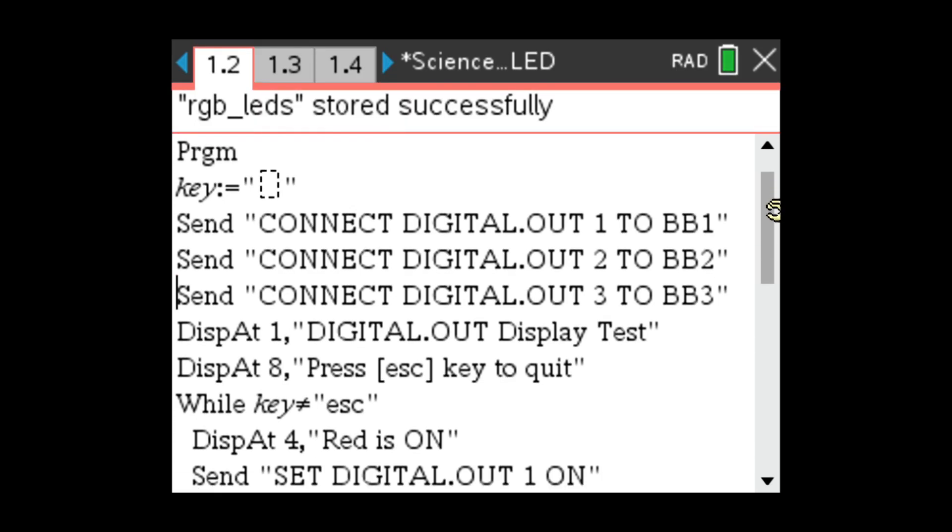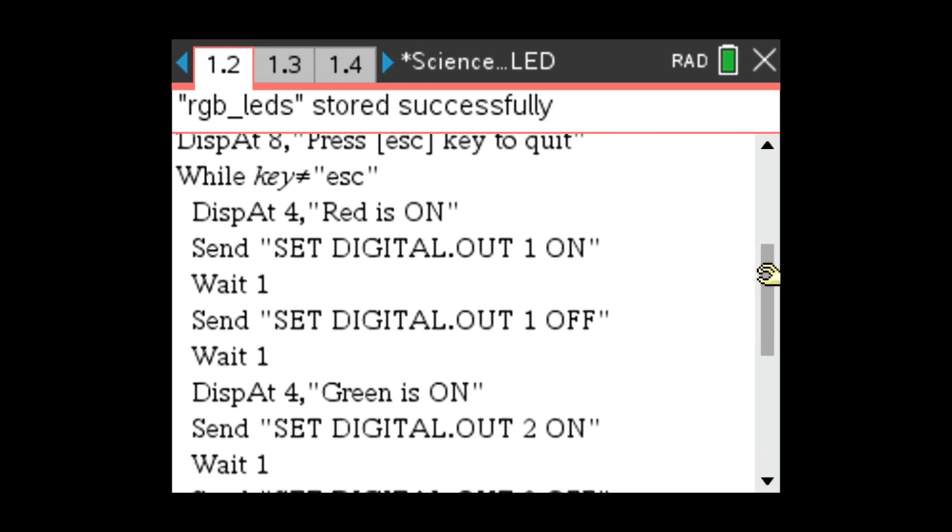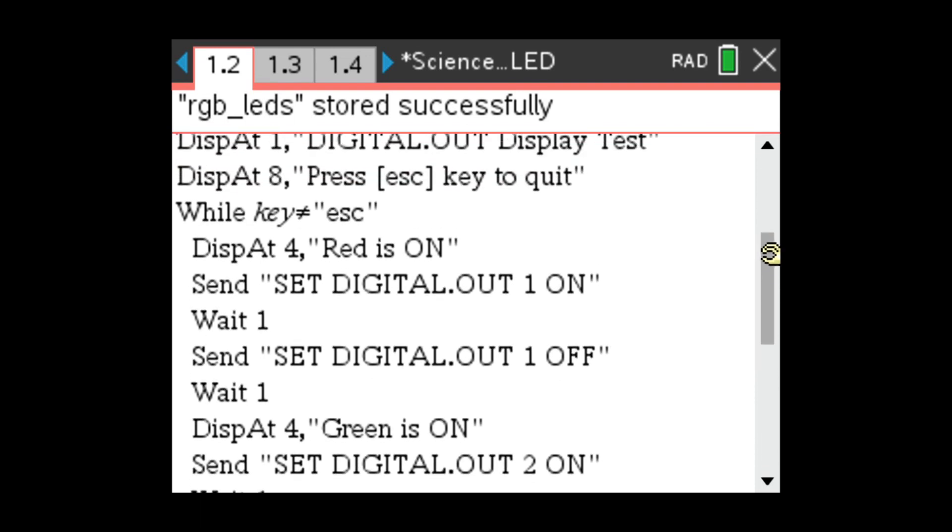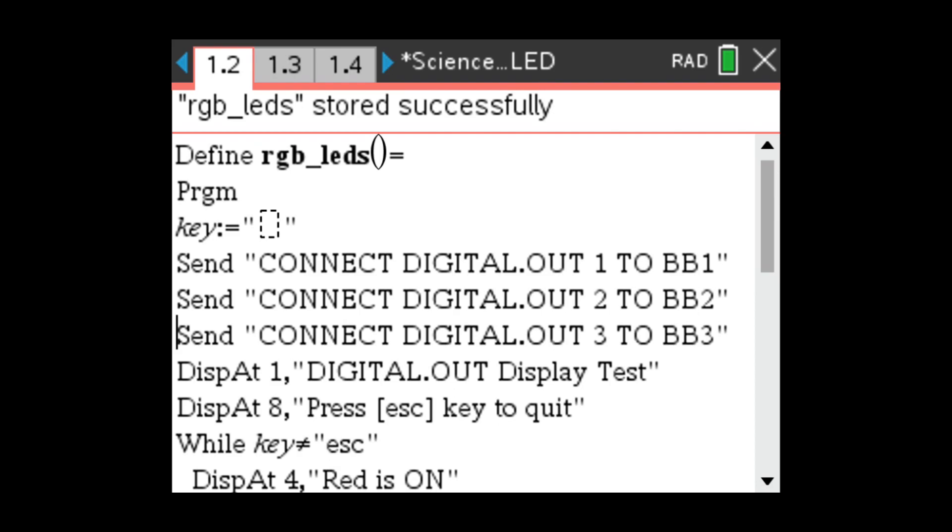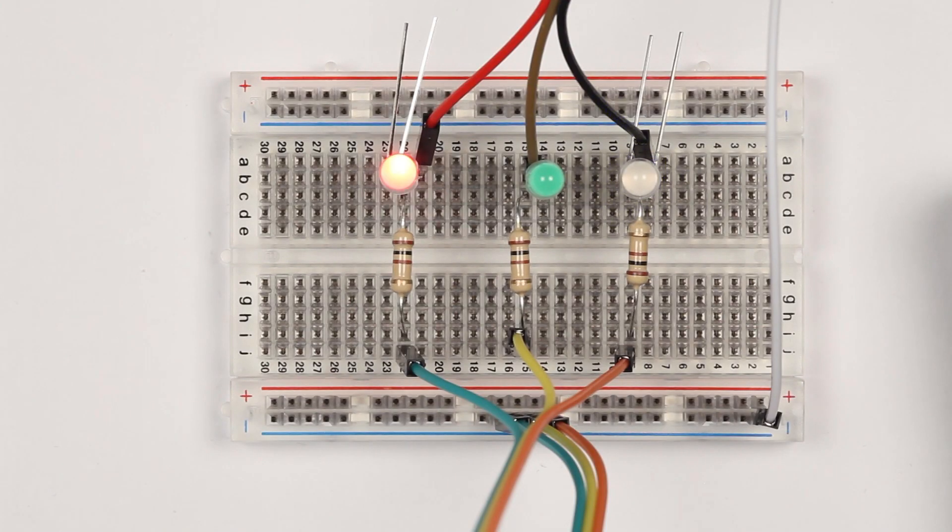After you've completed the breadboard build, write a program to test the 3 LED breadboard. Do this by repeatedly blinking each LED on and off. You'll need to physically connect a jumper wire from each LED to different breadboard pins on the TI Innovator Hub. The code for this test program is very similar to the programs found in the Unit 1 Skill Builder folder.